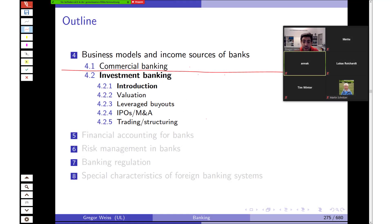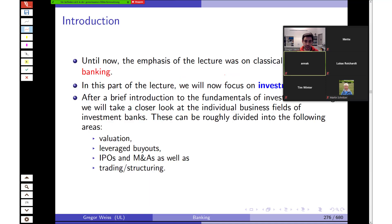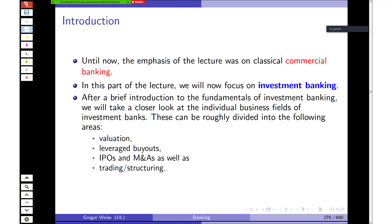Welcome back to our lecture on Introduction to Banking. Last week we finished with section 4.1 on commercial banking, and now we'll continue with investment banking. So far we've talked about the traditional services a bank offers — lending, giving out loans to retail customers and firms, and taking in deposits to finance lending activities. In the next part we'll focus on investment banking.